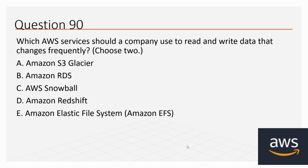Question number 90: Which AWS services should a company use to read and write data that changes frequently? Choose two. Options: A. Amazon S3 Glacier, B. Amazon RDS, C. AWS Snowball, D. Amazon Redshift, E. Amazon Elastic File System (EFS). The correct options are B and E: Amazon RDS and Amazon Elastic File System.